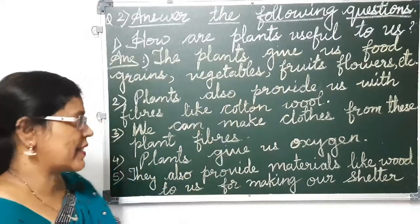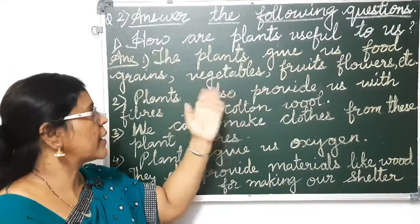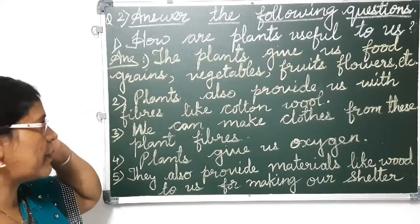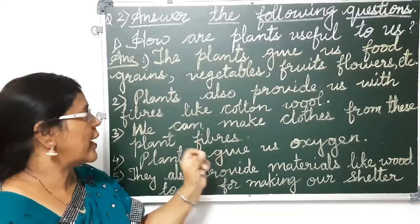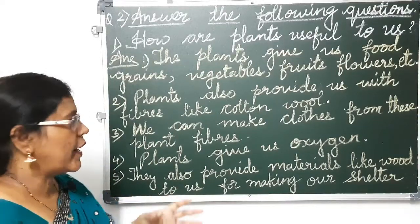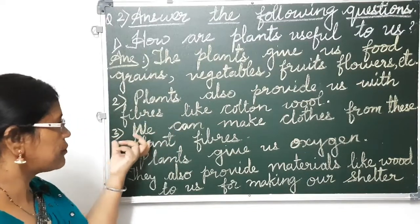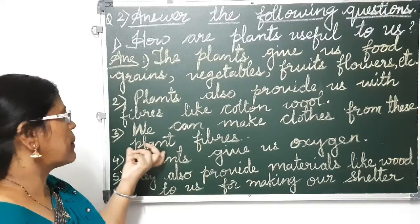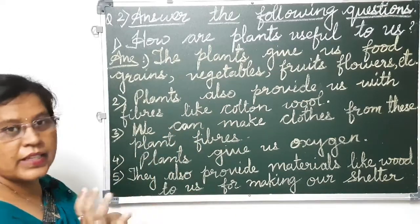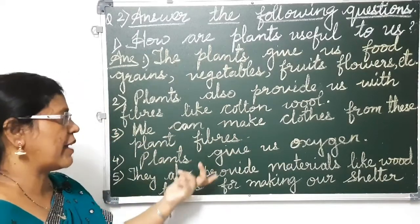Plants give us vegetables, fruits, flowers, etc. — all things very useful to human beings. Plants also provide us with fibers like cotton wool. We can make clothes from these plant fibers.